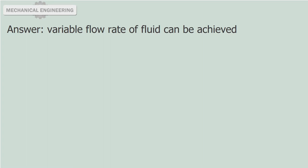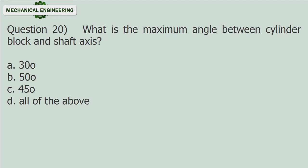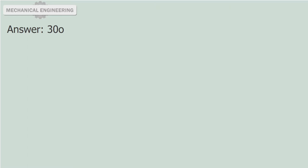Question 20: What is the maximum angle between cylinder block and shaft axis? A) 30°, B) 50°, C) 45°, D) all of the above. Answer: 30°.